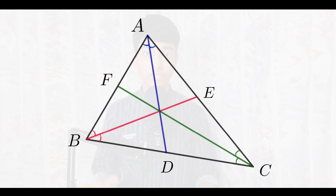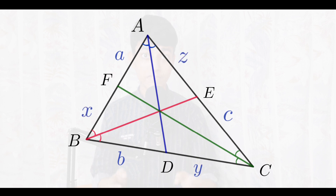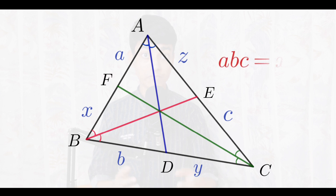The second thing happening here was observed by Ceva. Because of points D, E, and F in triangle ABC, the sides are getting divided. Let the length of segment AF be equal to a, BD be equal to b, and CE be equal to c, and the remaining ones be equal to x, y, and z. Ceva observed a very nice relation between these line segments: the product of a, b, and c equals the product of x, y, and z.